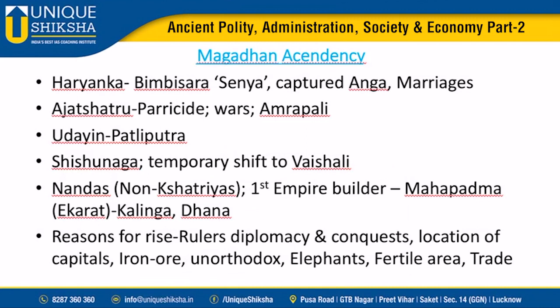Regarding Magadha's ascendancy - why did Magadha emerge as the supreme Mahajanapada? Their capital locations were strategic, first Rajgriha and later Pataliputra. They were close to iron ore resources and situated in the middle Gangetic plains - a fertile area with riverine trade possibilities. Their rulers and population had an unorthodox character, and they produced great rulers starting from Bimbisara and Ajatashatru.